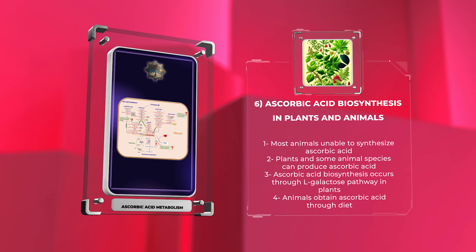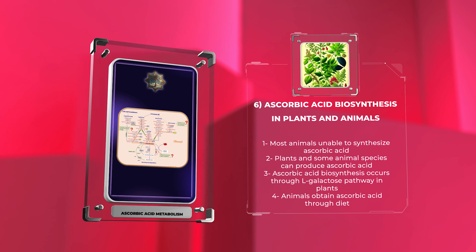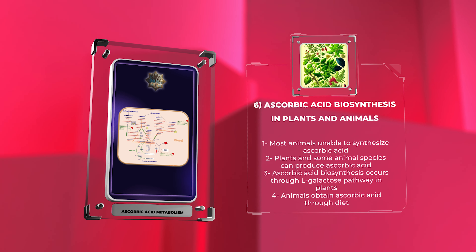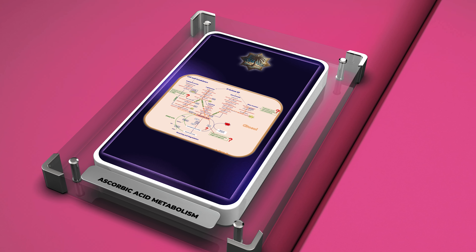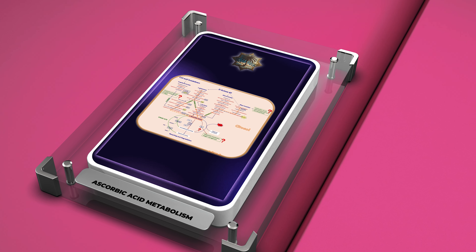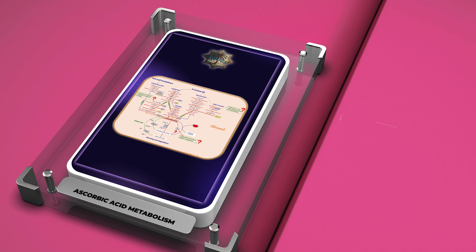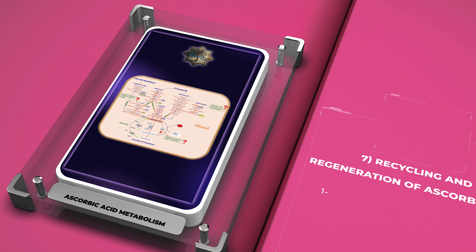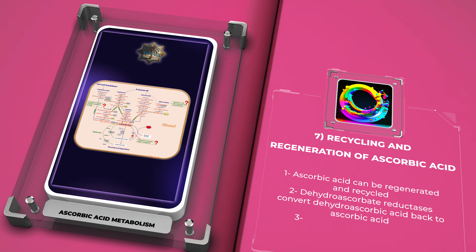For animals incapable of synthesizing ascorbic acid, it is an essential dietary component obtained mainly from fruits, vegetables, and certain animal products. Understanding the biosynthetic pathways is crucial for comprehending the regulation and maintenance of ascorbic acid levels in various organisms. Ascorbic acid is a unique molecule that can be regenerated and recycled, allowing it to partake in multiple redox reactions.